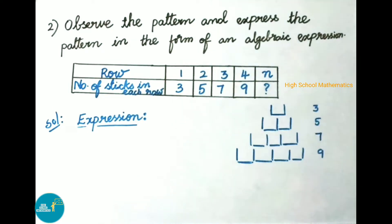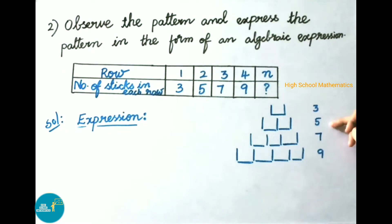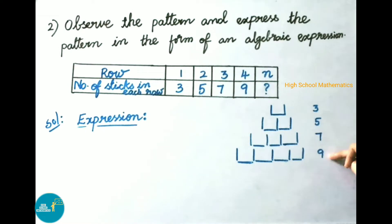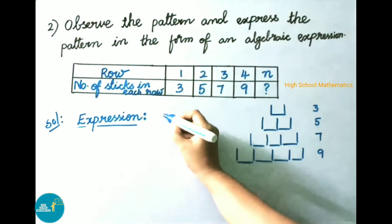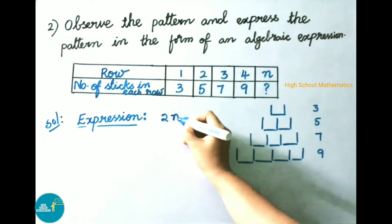Looking at the difference in matchsticks required each row: 5 minus 3 equals 2, 7 minus 5 equals 2, 9 minus 7 equals 2. The common difference is 2. So for n number of rows, we write 2n plus 1.